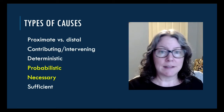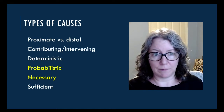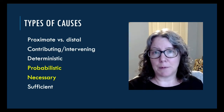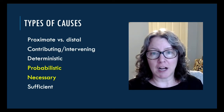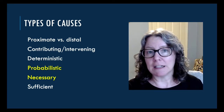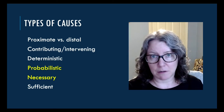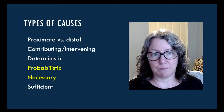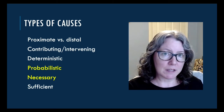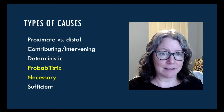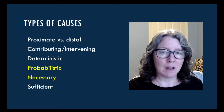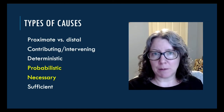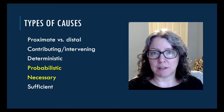A distal cause is a long-term one — for example, changes in the structure of the economy create the conditions for democratization. Both proximate and distal causes can be true, but you should be clear about which one you're interested in.